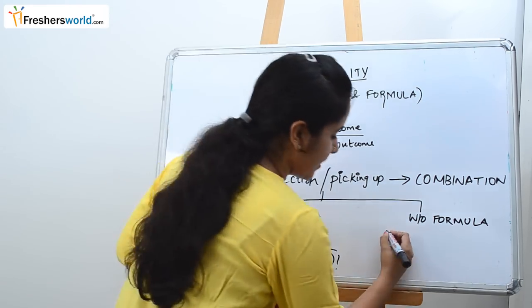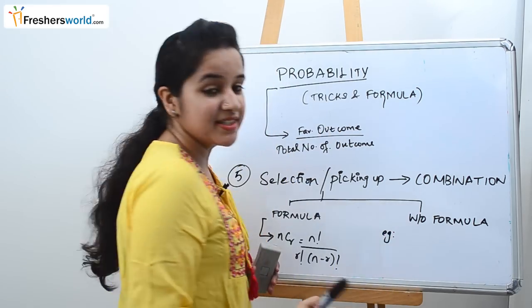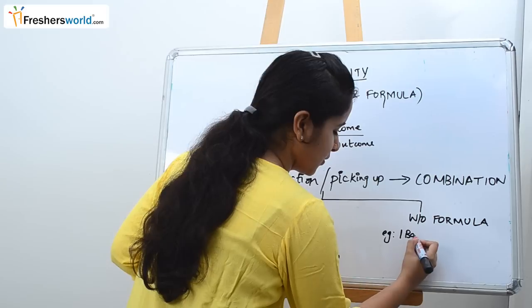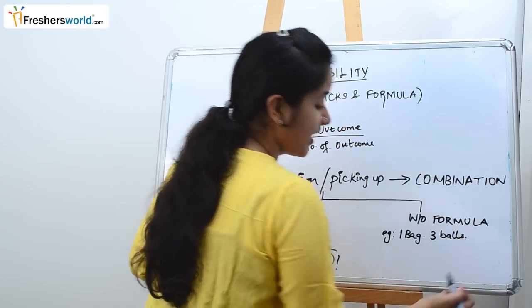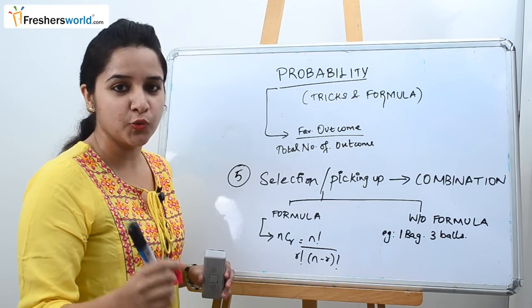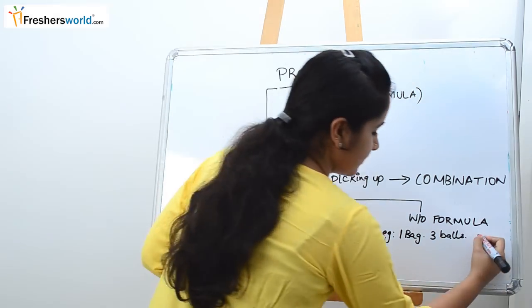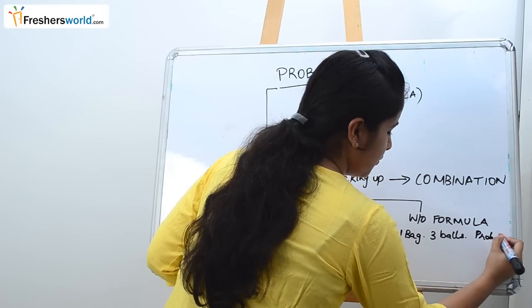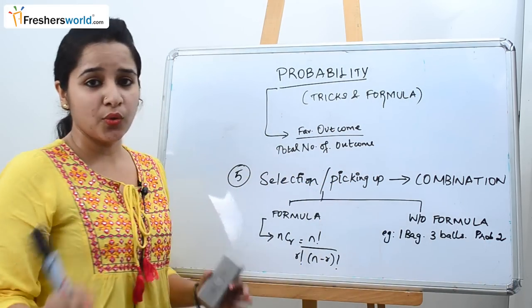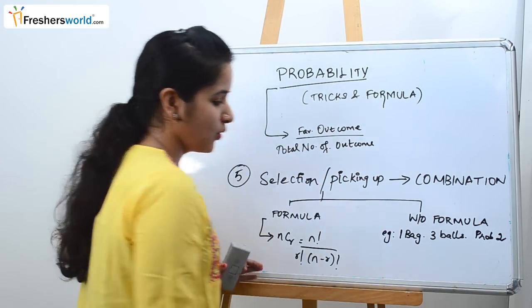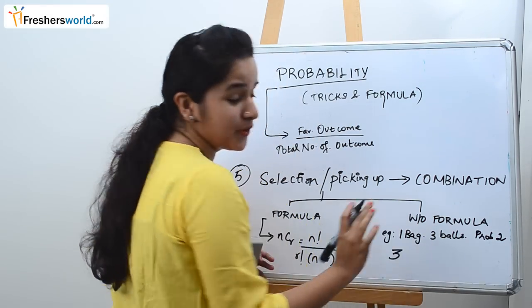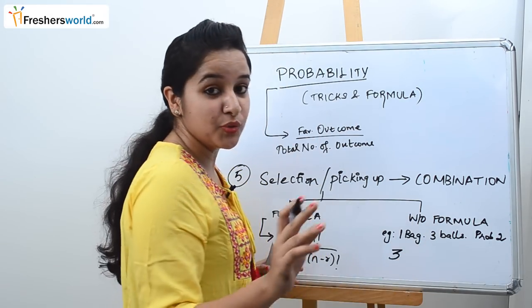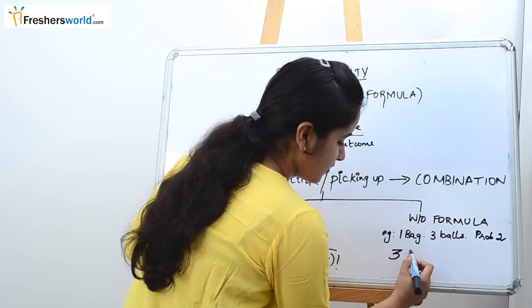Let's take an example. Let's say we have a single bag, one bag which contains three balls out of which they are asking the probability of you picking up two balls. Let's say you don't know the formula. So how do you do it? So maximum is three balls that you have in a bag out of which you need to take two balls. So 3C2.